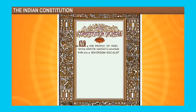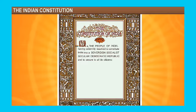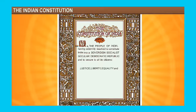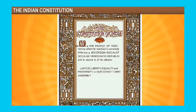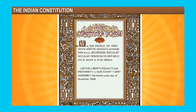Especially you may observe in the preamble nine main things: sovereign, socialist, secular, democratic, republic, justice, liberty, equality, and fraternity. These are all the main important things on which our Constitution is based.